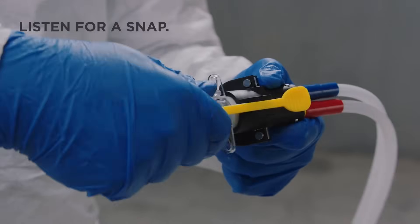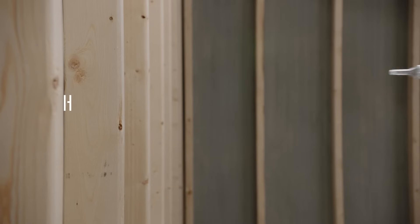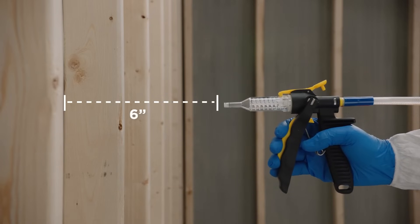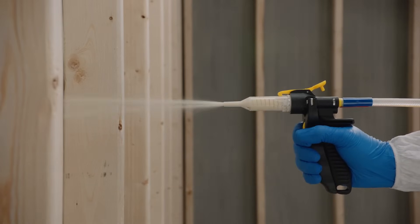Push the nozzle firmly into the Instaflow dispenser. Hold the dispenser at least six inches away from the spray area and fully engage the spray trigger when you're ready.